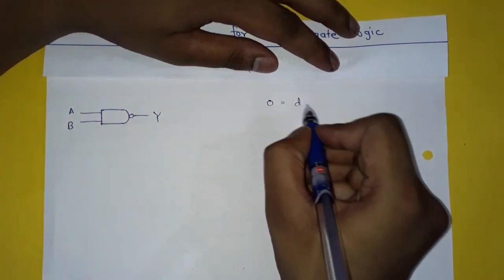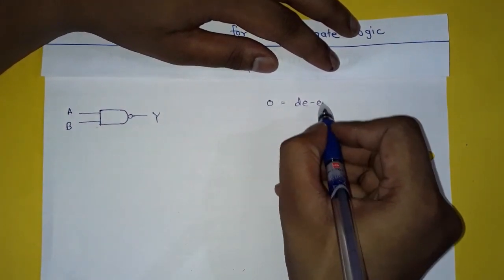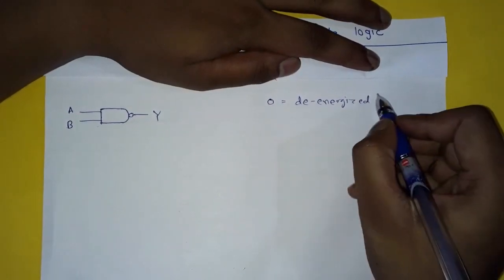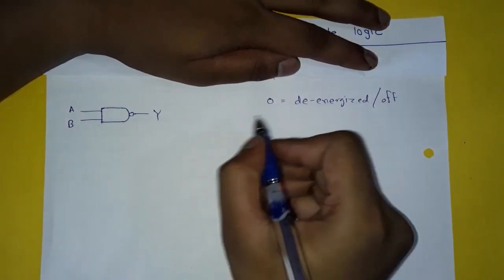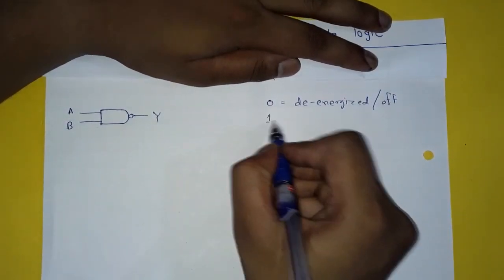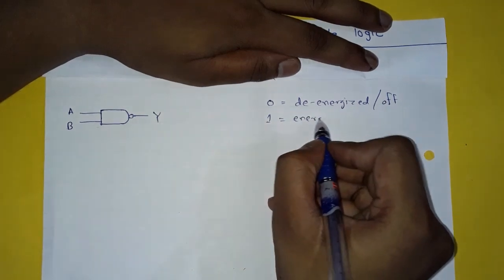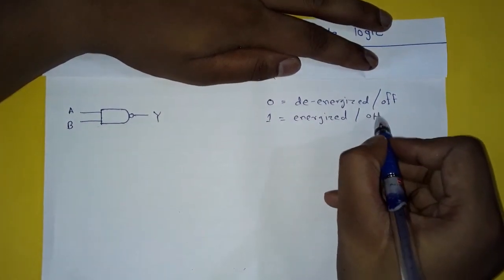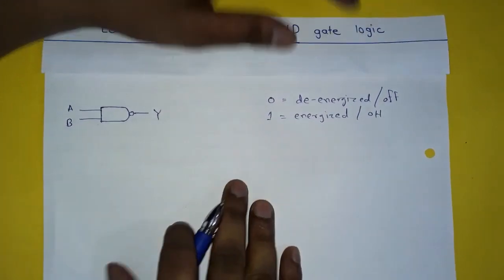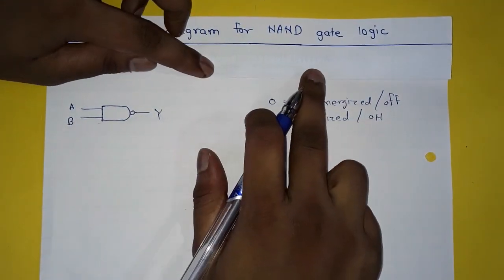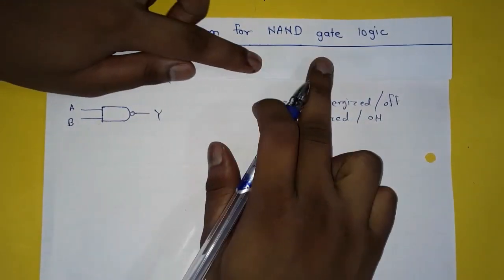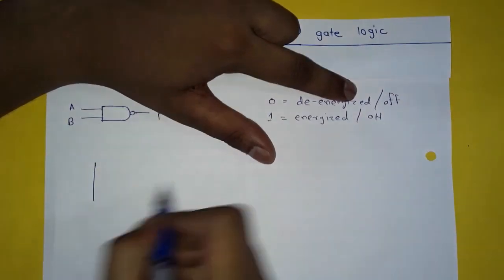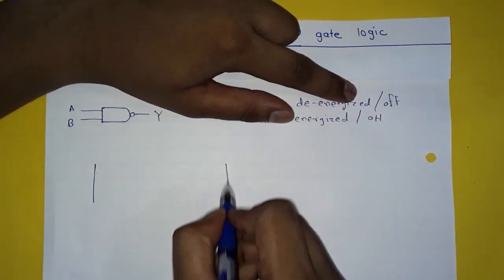In the video, 0 will represent the de-energized condition of the coil — that is the off condition. 1 will represent the energized condition of the coil — that is the on condition. Now let's see how to use NAND gate logic in ladder diagram.